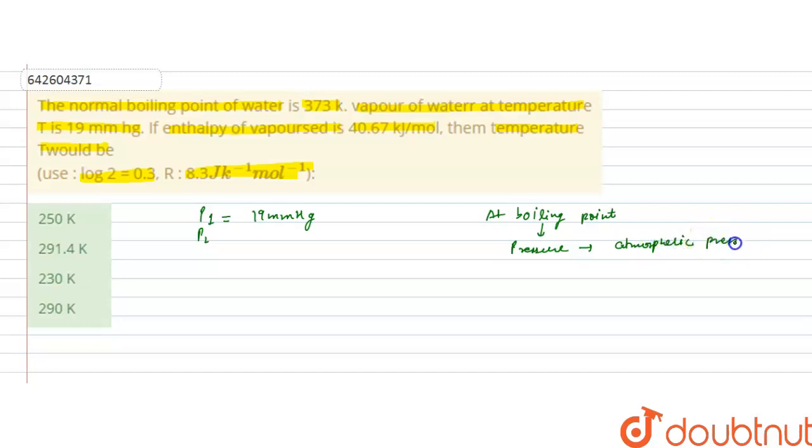Atmospheric pressure, that is normal atmospheric pressure, is 1 atmosphere. And 1 atmosphere in millimeters of mercury is 760 millimeters of mercury.